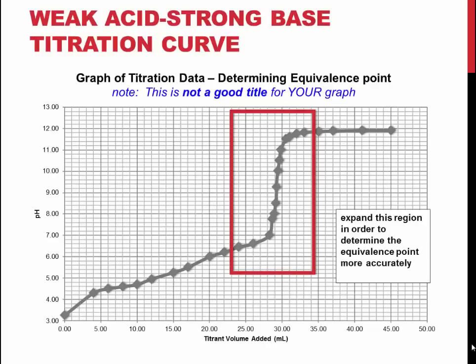Beyond the buffer section, the pH increases rapidly, passing through the equivalence point, which is the inflection point of the curve. From this point, you can find the volume needed to reach the equivalence point, which you can then use to find the concentration of the weak acid. It can also be used to find the half equivalence point, and this allows you to calculate the pKa of the weak acid based on the Henderson-Hasselbalch equation.